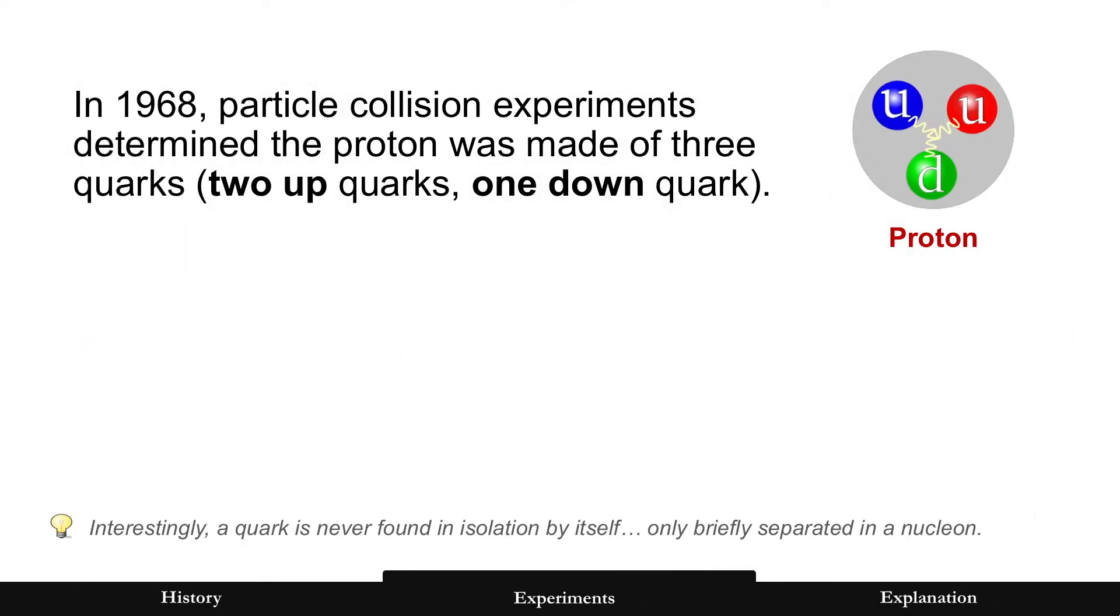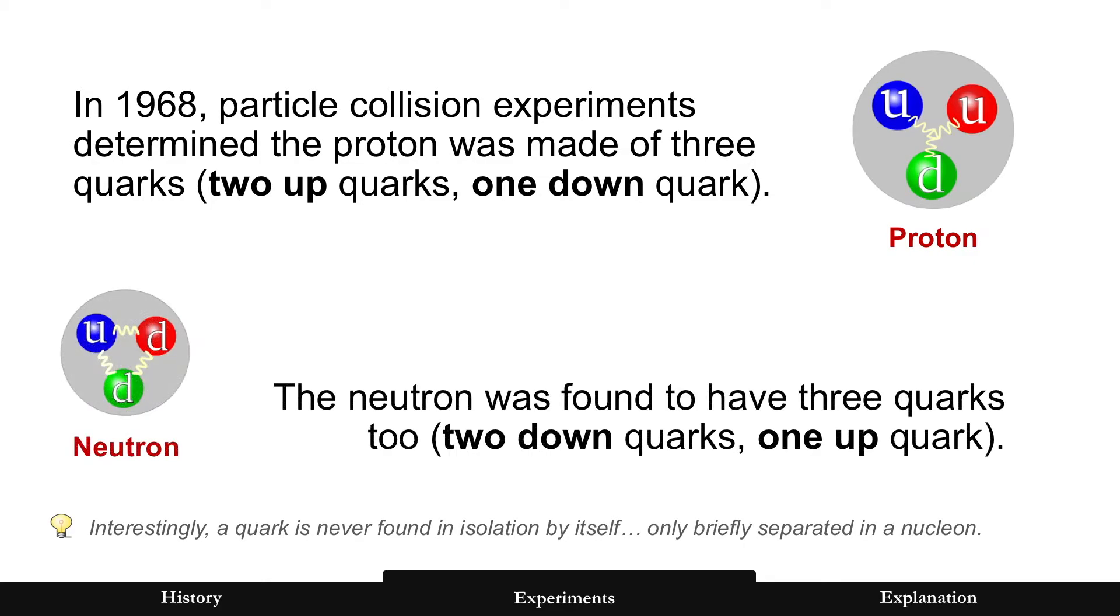And it really is confusing, and it started to get confusing in 1968 when the proton was determined to be a composite particle, meaning that it is consisting of other particles, and it was determined then at that time that it consists of three quarks. And the neutron also consists of three quarks, but there's a difference in their type of quarks that you can see here.